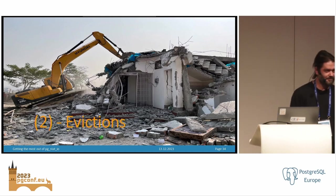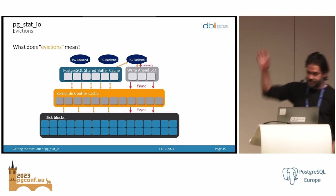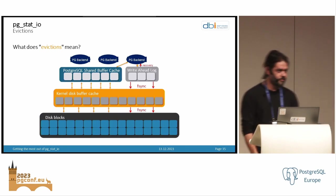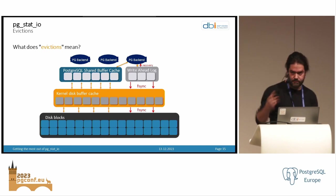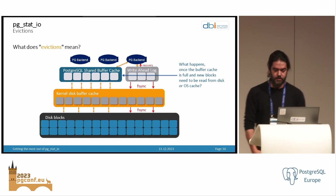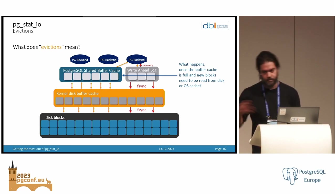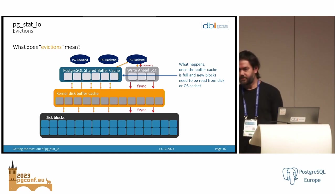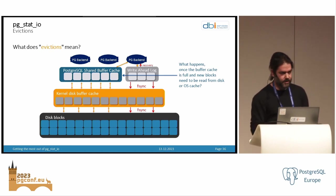Let's talk about evictions. What is an eviction? Here is a simplified picture of a running Postgres instance. On top you have the Postgres cache defined by shared_buffers. Below that there is the OS with the file system cache. And then you have the disks. When the cache is full and Postgres needs to make room for new blocks to be loaded from disk or from the OS cache, it kicks out blocks from shared buffers. This is exactly what evictions are about.